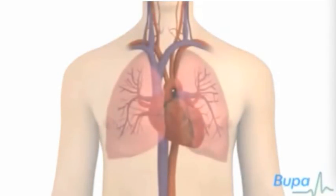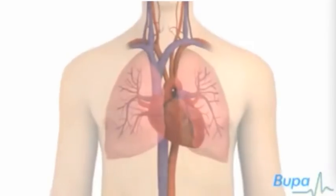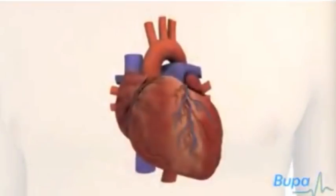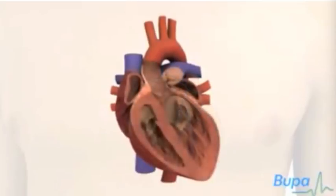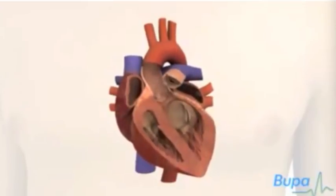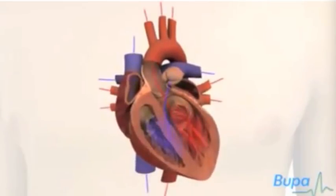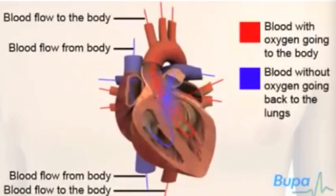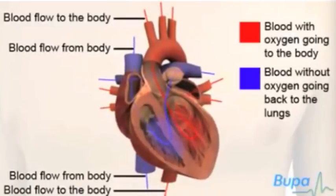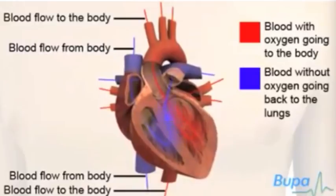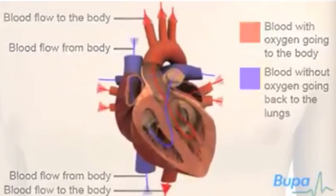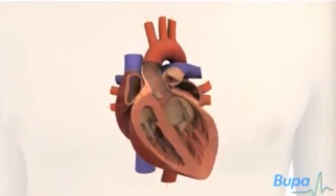The heart is a muscular organ that lies in the center of the chest. It pumps blood containing oxygen from the lungs to the body, and passes unoxygenated blood back to the lungs to absorb more oxygen. To do this effectively, the heart is divided into four chambers — two on the right and two on the left.